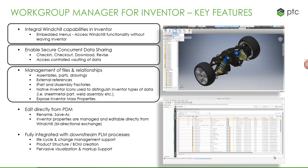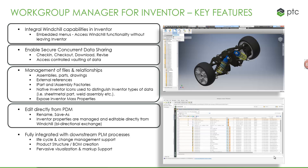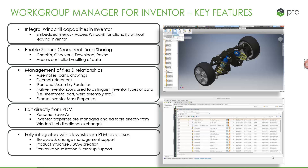We also manage iPart factories and iAssembly factories, and we use native Inventor icons in the UI to easily distinguish between things like sheet metal parts and standard solid model parts. We can also expose Inventor mass properties in Windchill. We have specific PLM capabilities to support complex operations like save as and rename, and we can bidirectionally map attributes between Windchill and Inventor. It is fully integrated into downstream PLM processes, change management, BOM management and visualization.